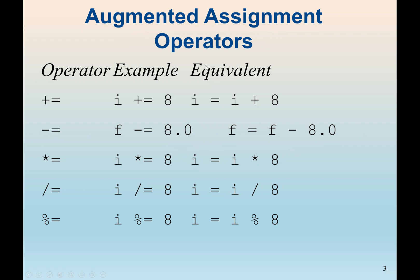The augmented assignment operators in C++ are the same as in Java. We can use the augmented assignment operator, for example plus-equal. When we say i plus-equal 8, it means we are going to add 8 to the variable i and then update the previous value in i. So i plus-equal 8 is the same as i equals i plus 8. If the previous value of i is 10, we add 8 to get 18 and store it back in i.